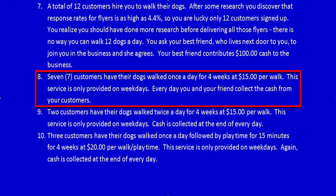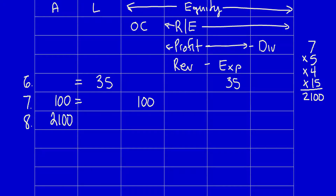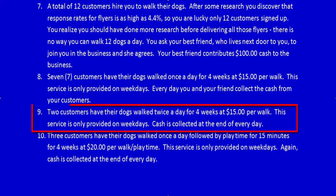Item 8: seven customers have their dogs walked once a day for four weeks at $15 per walk. This service is only provided on weekdays, and every day you and your friend collect the cash from your customers. What did the company get? They got cash — an asset with future economic benefit. The calculation: 7 customers × 5 days a week × 4 weeks × $15 per walk = $2,100. What did the company give away? They provided a service, so revenue increases by $2,100.